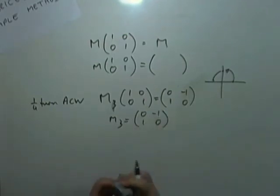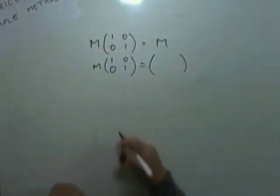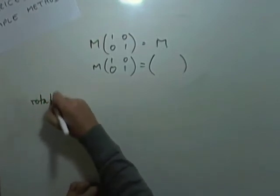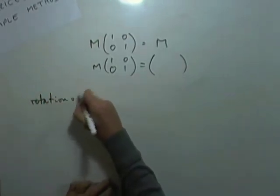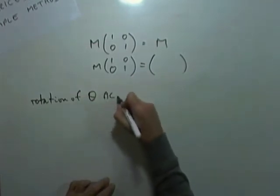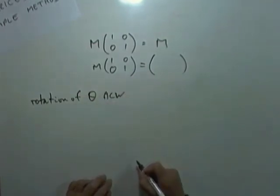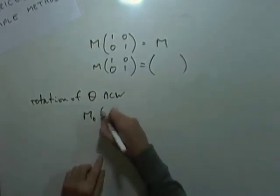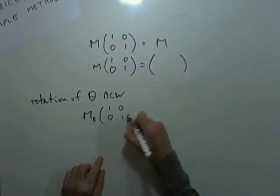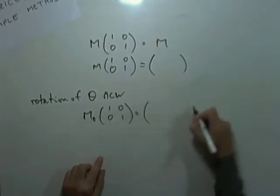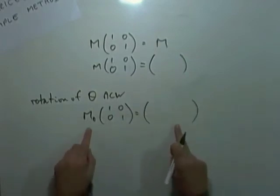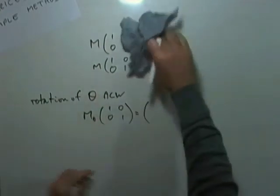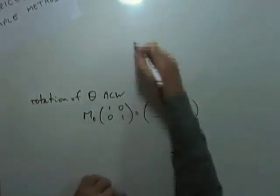And so on for any ones that you like. The only trickiest sort of one would be the one for a general rotation. For a rotation of theta anticlockwise. We do exactly the same way. What's the matrix associated with the rotation of theta anticlockwise? Multiply it by the identity element. And whatever you end up with will be that matrix.